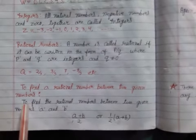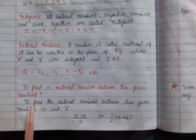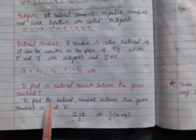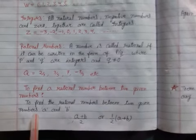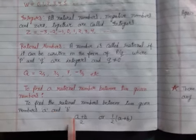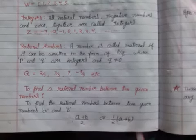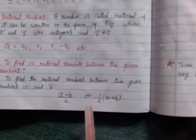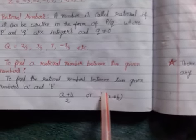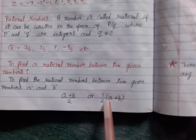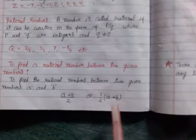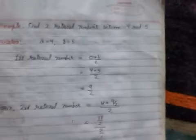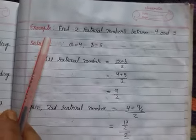Now to find a rational number between two given numbers, there is a simple formula. To find the rational number between two given numbers a and b, the formula is: a plus b by 2. That means the mean of a and b. It can also be written as 1 by 2 into a plus b.